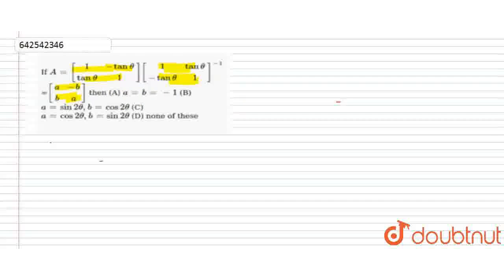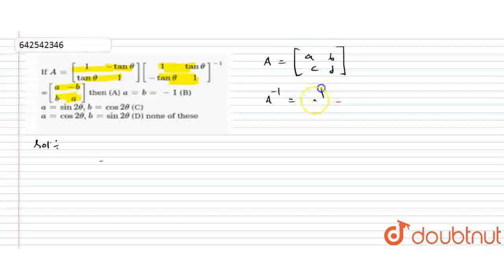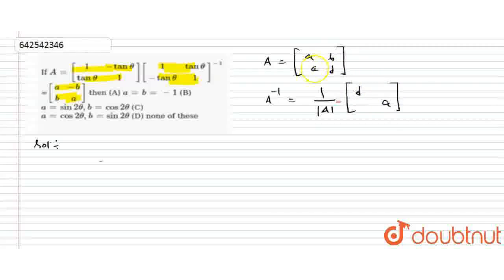So let's move to the solution. Before moving to the solution, let me tell you how we can find out the inverse of any matrix. Suppose we have a matrix with elements A, B, C, D. There is a very simple method: find out the determinant of this matrix, then swap the diagonal elements — writing D and A — and change the signs of B and C to minus B and minus C.